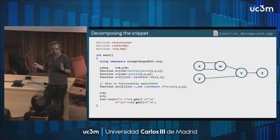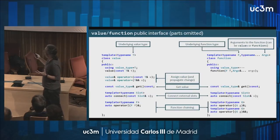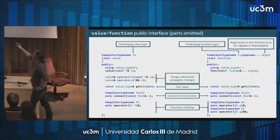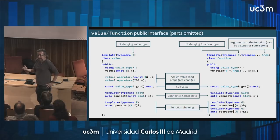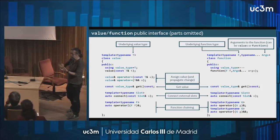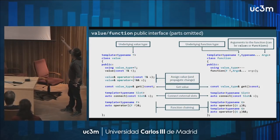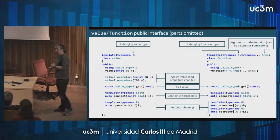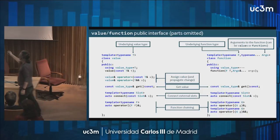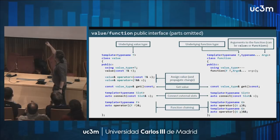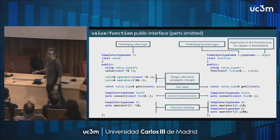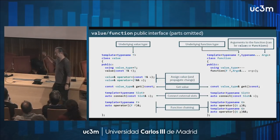Now we know the general layout of the value and function class templates. Value is templatized with the type of the value it holds. Function takes a modifying function of the dependent values and a list of nodes the node depends on. The rest of the interface is boilerplate: assignment operators for values, getters, connect for connecting external slots, and operator pipe which we'll discuss later.